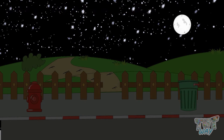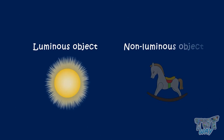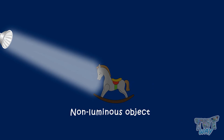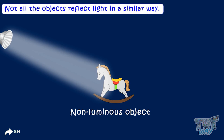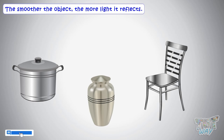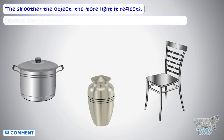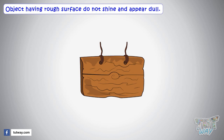So kids, we learnt how we see different objects, and what are luminous and non-luminous objects. We learnt that all non-luminous objects are reflecting the light falling on them, but not all objects reflect light in a similar way. The smoother the surface, the more light it reflects. This is why objects having a smooth surface appear shinier, brighter, and glossier, while objects having rough surfaces do not shine and appear dull.